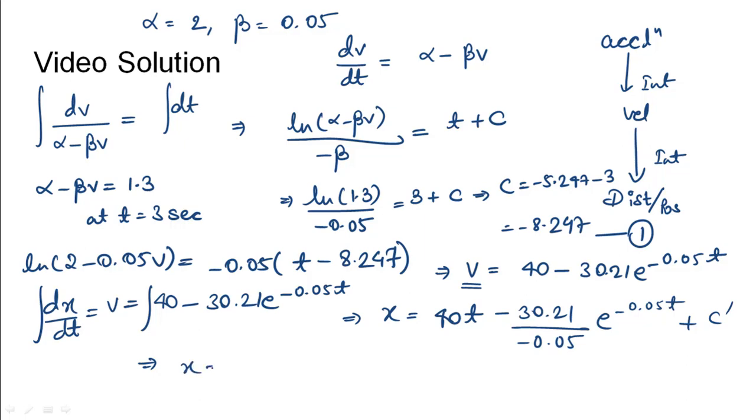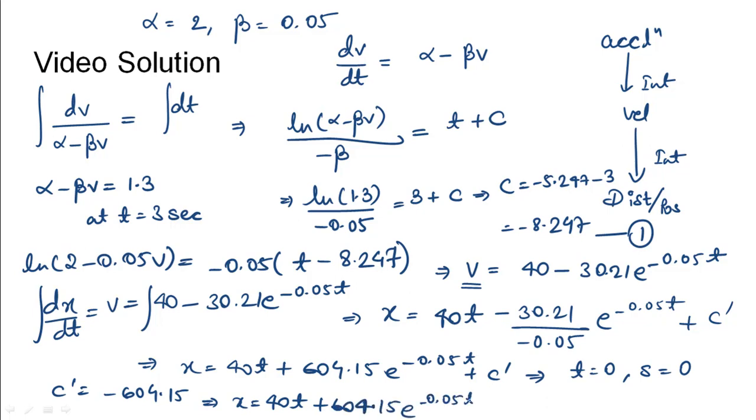Using this we would get the value of x as 40t plus 604.15 e power minus 0.05 t plus c dash. Substituting the value of t equals 0 and the position will also be 0 at the initial point, we would get the value of c dash as minus 604.15. Substituting this back, we get x as 40t plus 604.15 e power minus 0.05 t minus 604.15.